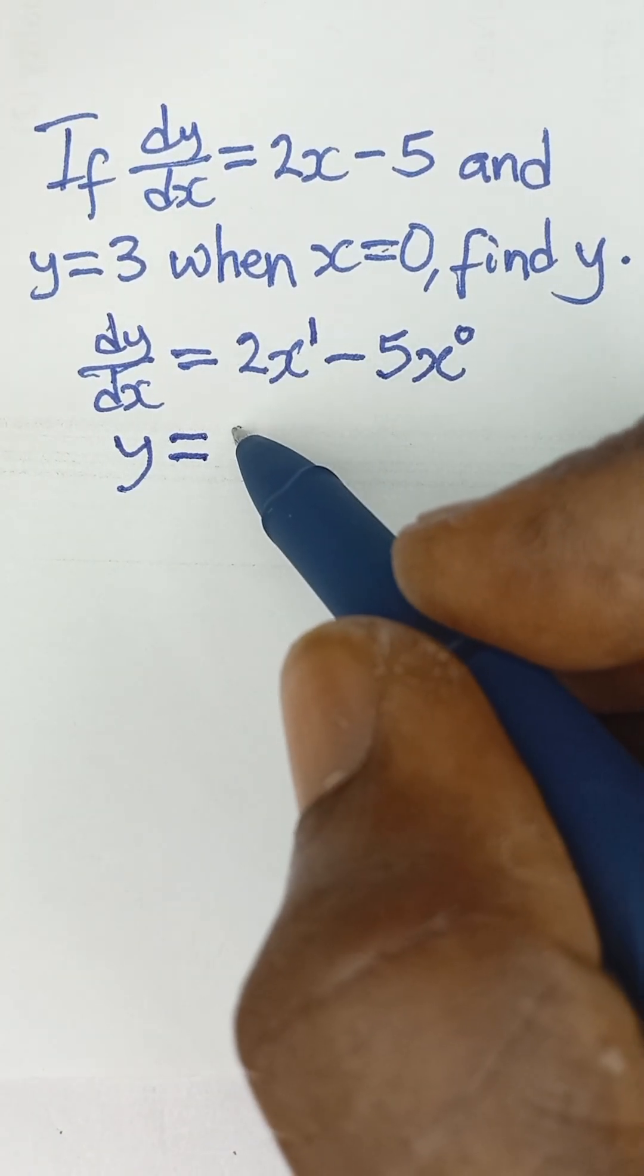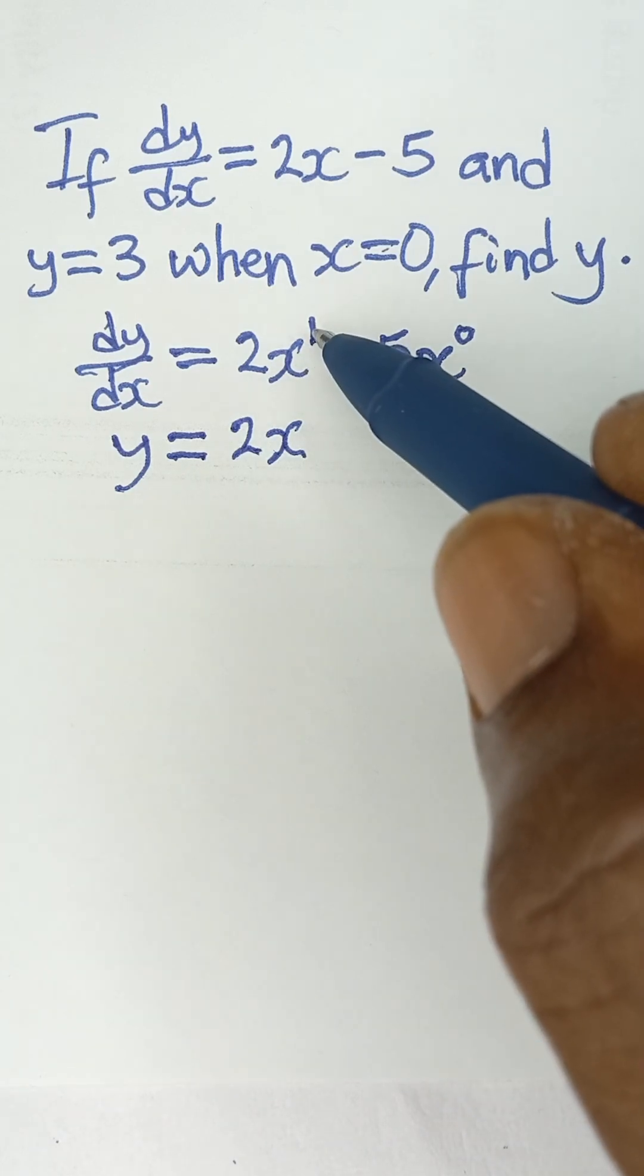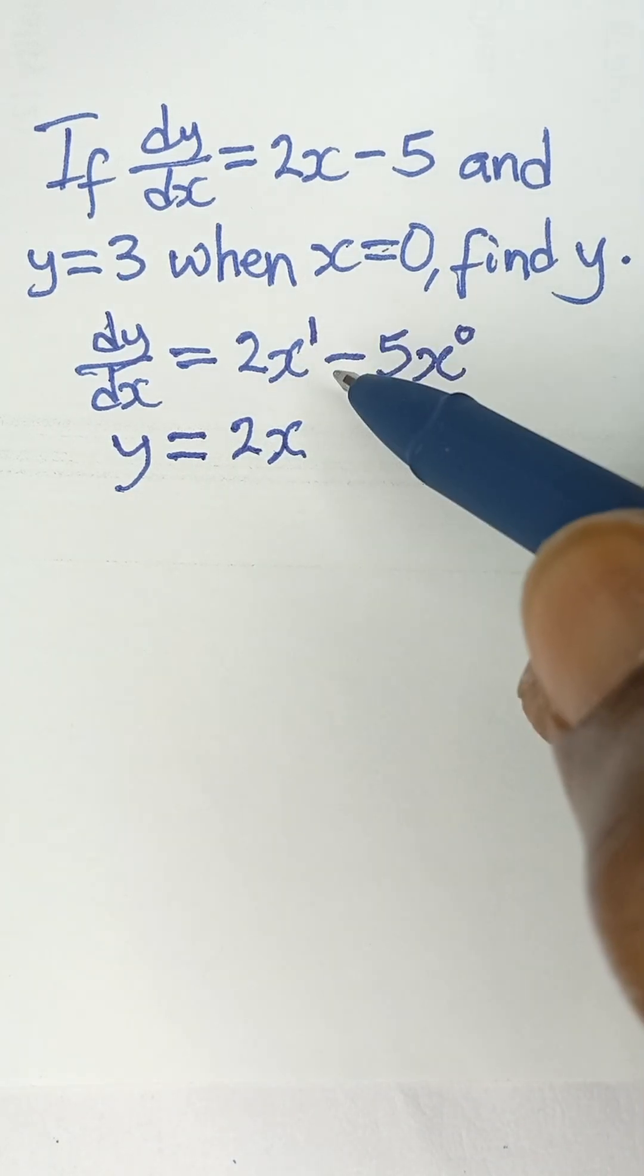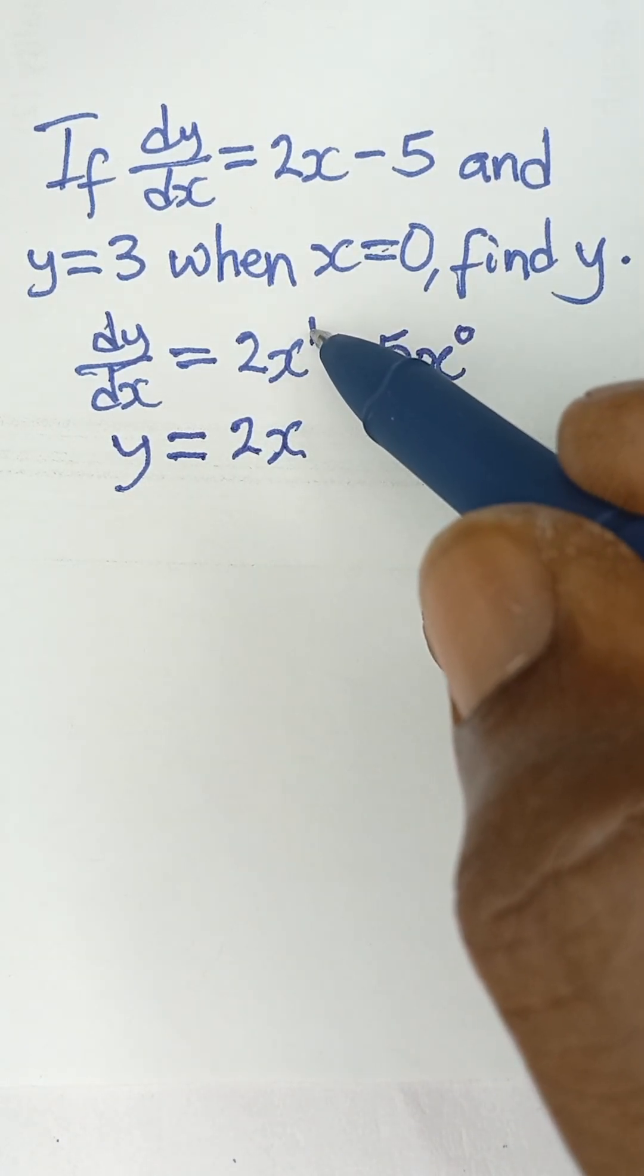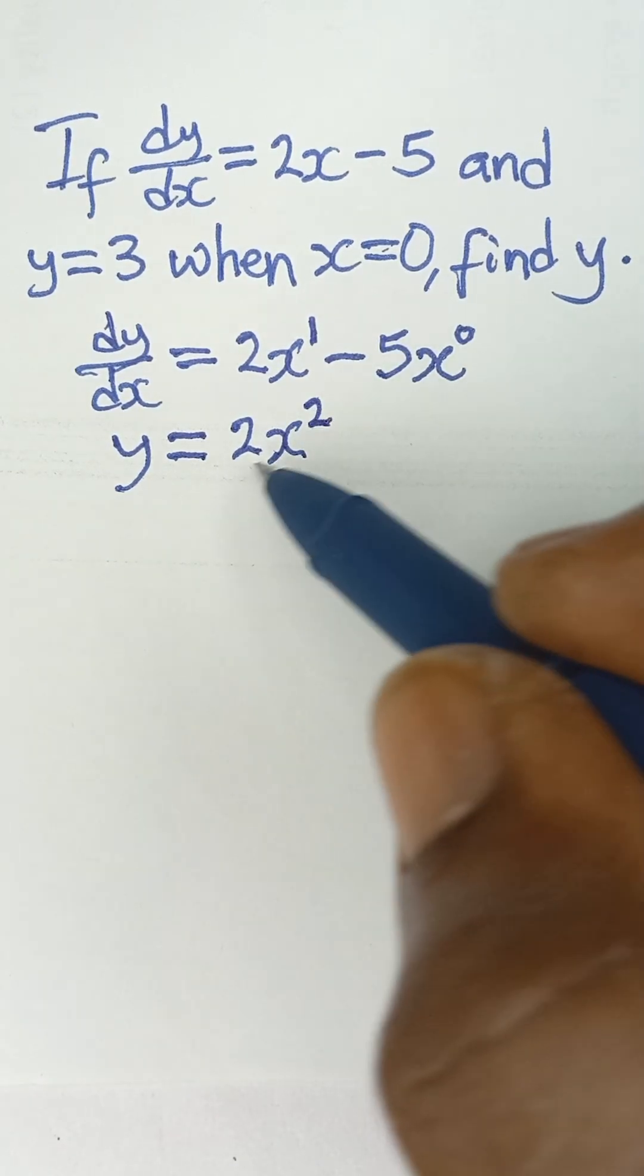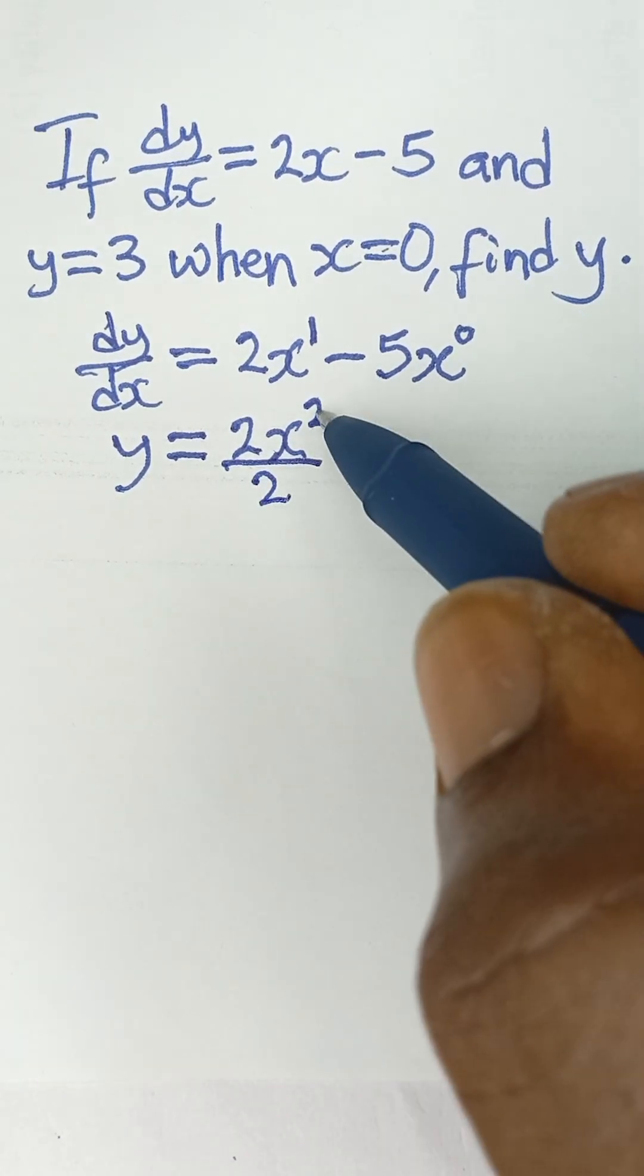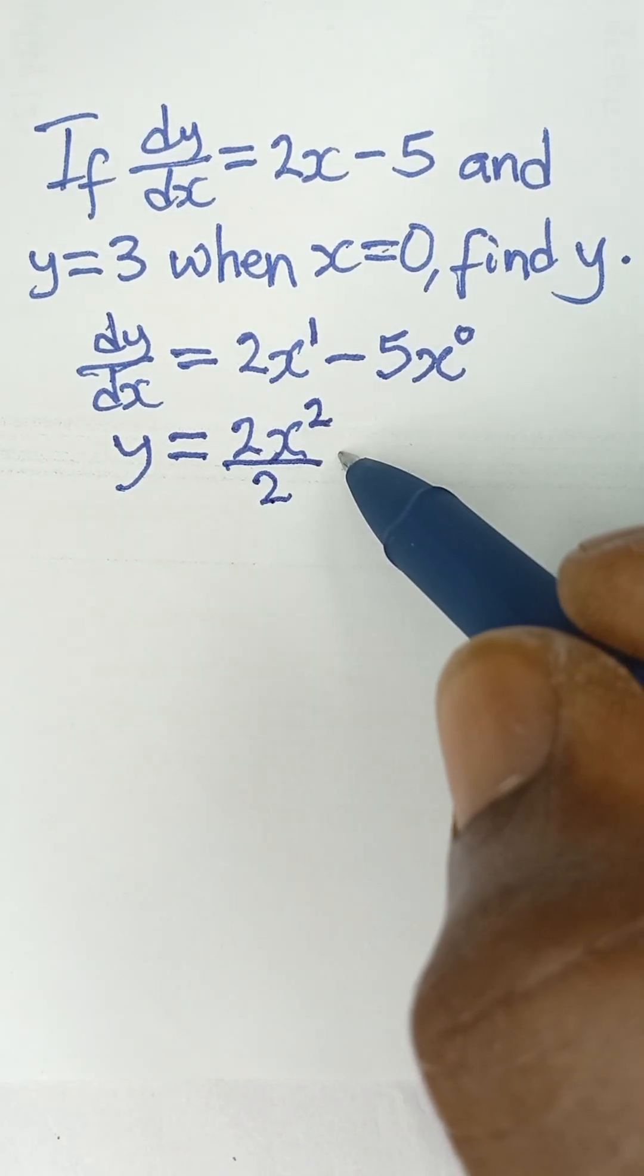For us to integrate this, we are going to say 2x raised to the power 1. The power here, we have to add 1 to it. So when we add 1 to the power 1, 1 plus 1 gives us 2. So we are going to use this 2 to divide the expression that we have here. So this 2 here, we put it down, and then we say minus...